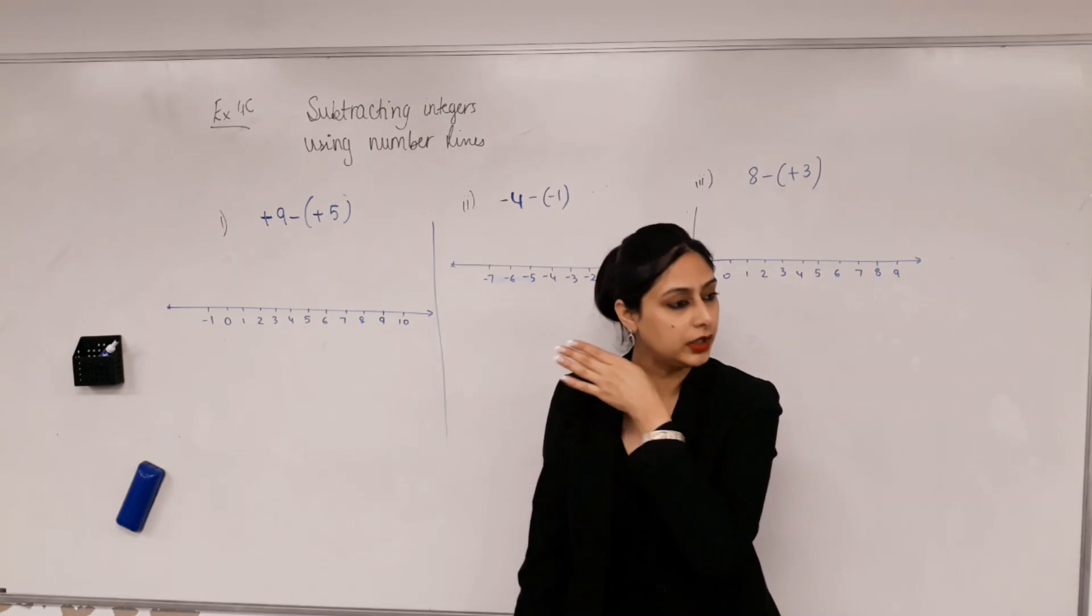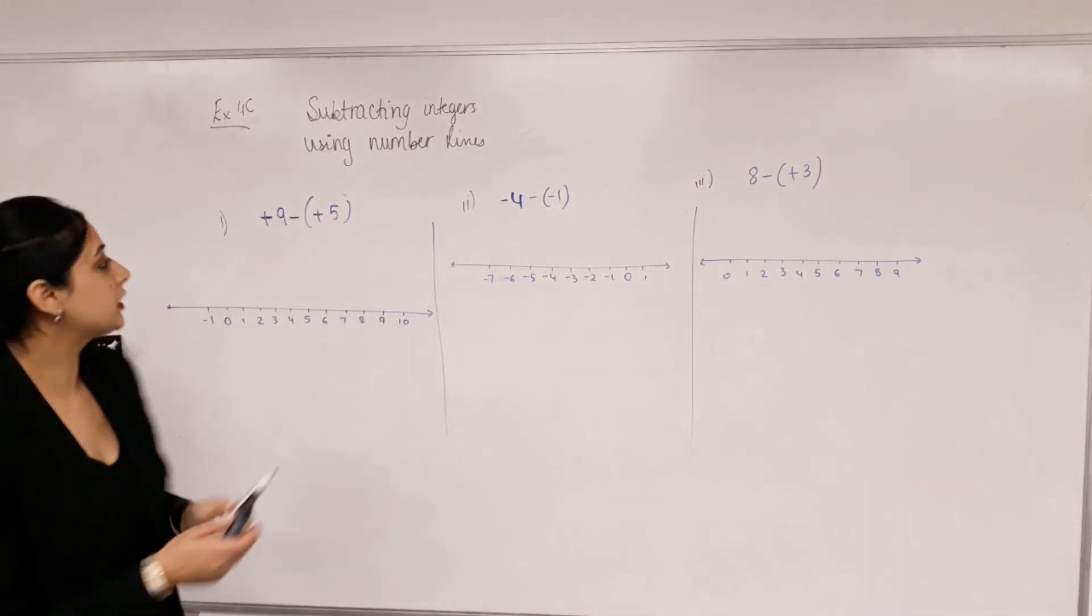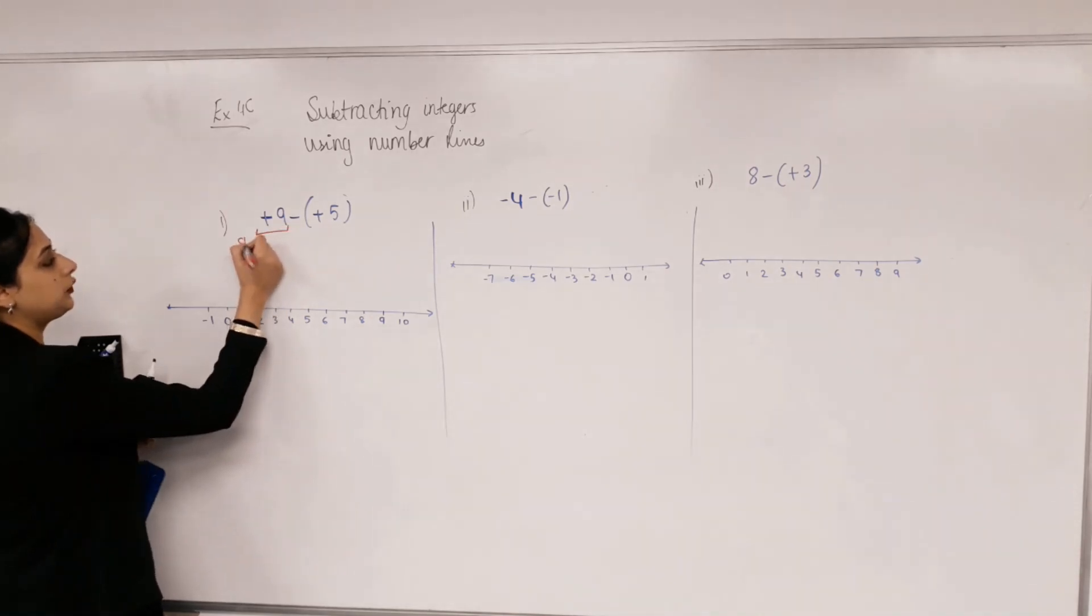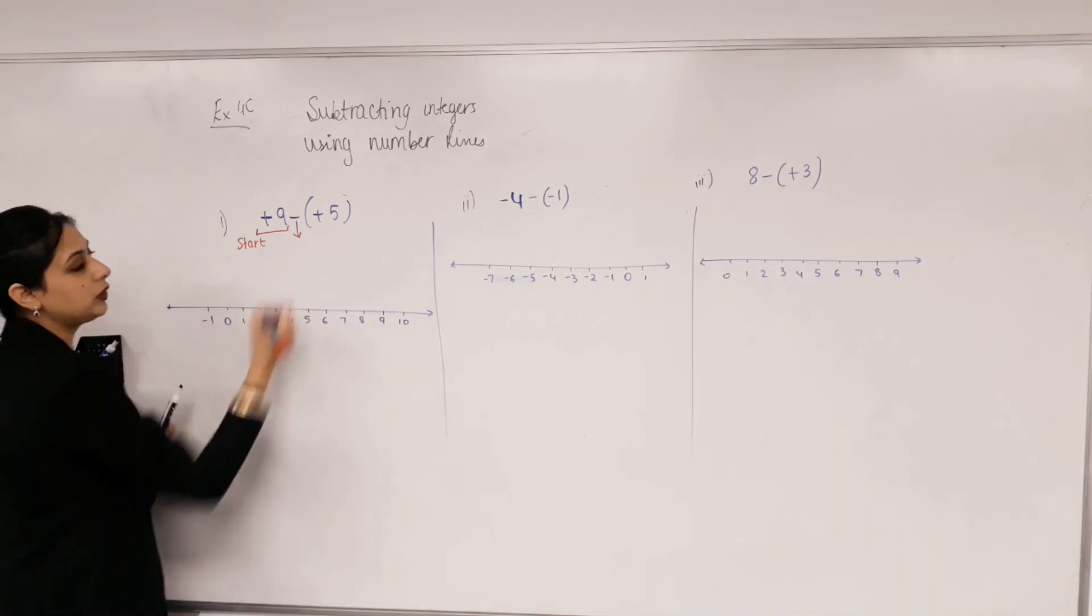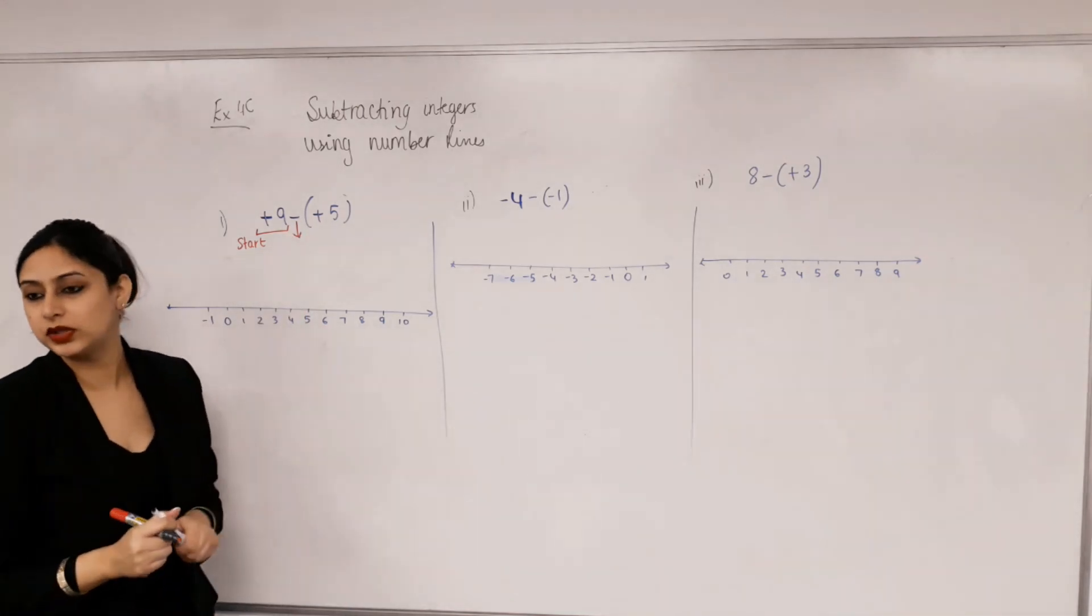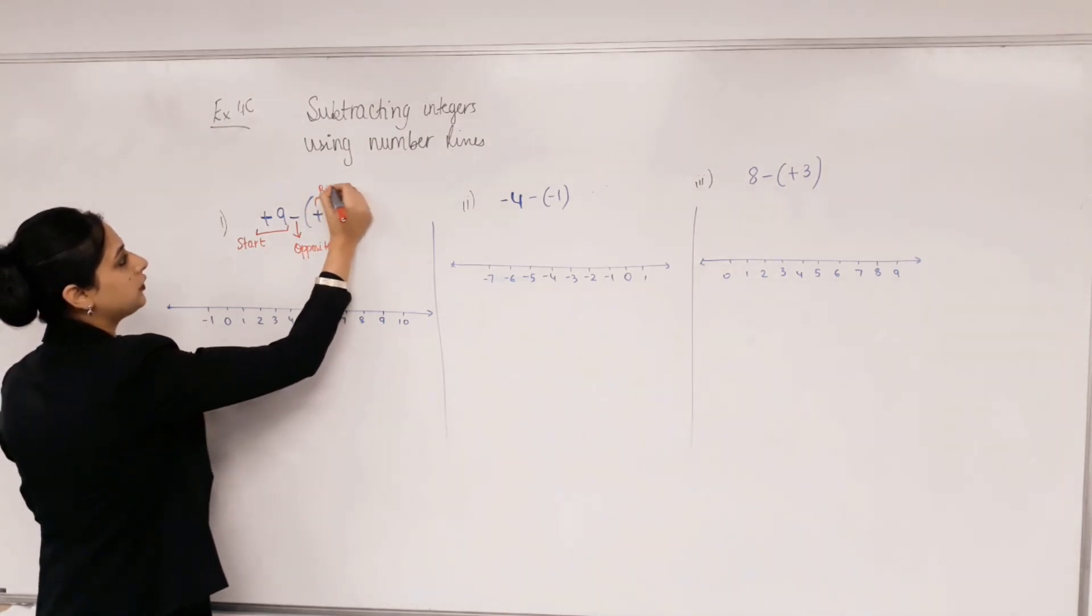Now what happens when we are subtracting? It's similar, just one difference. We start from the first number on the number line, but because there's a minus, minus doesn't want to do what it's told, so it does the opposite. Opposite of what plus five means, right?